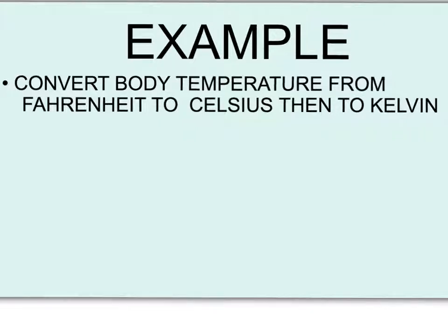Here, we are asked to convert body temperature from Fahrenheit to Kelvin. In order to do that, we will need to convert from Fahrenheit to Celsius. I've set up the equation: Celsius equals 0.55 times Fahrenheit minus 32. So our Celsius would equal 0.55 times 98.6 minus 32, and therefore it would equal 36.63.